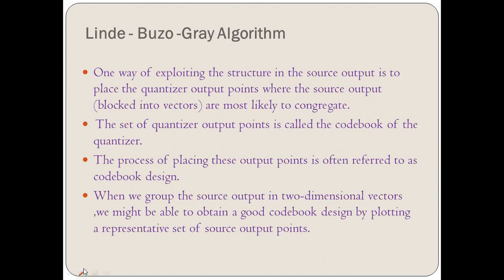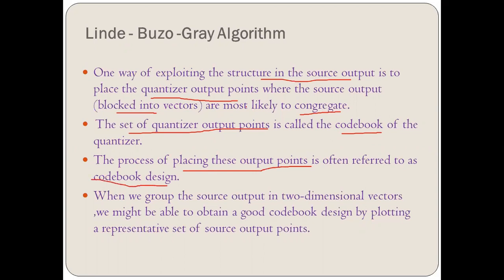In LBG, one of the ways of exploiting the structure in the source output is to place the quantizer output points where the source outputs are most likely to congregate. We are talking here about blocks of vectors. The set of quantizer output points is called the code book — whatever the quantizer output points we get, that particular set is called the code book of the quantizer. The process of placing these output points is called code book design.